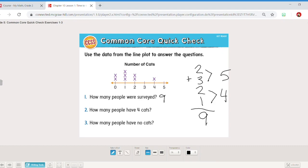How many people have four cats? Find the four. One person. How many people have no cats? Well don't just look for the empty spaces. You have to find zero because that's the amount of people who have no cats. It's like two people don't have any cats at all.